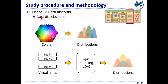In phase 3, we conducted data analysis. Prior studies reported the role of colors in classifying emotion; however, those images were not from social media, so we wanted to see whether similar aspects would be observed in social media images. We checked the distribution of colors for each emotion group. We also examined the distribution of visual hints, but first conducted topic modeling using LDA, then checked the distribution of topics of visual hints for each emotion group.